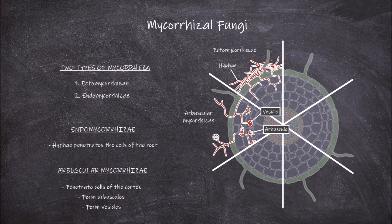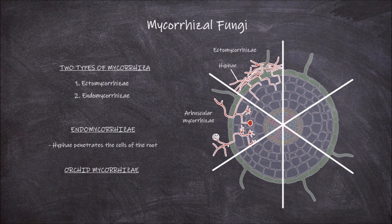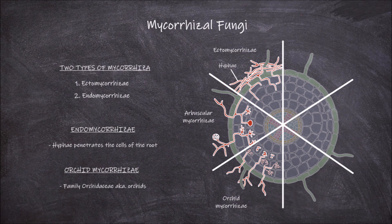Another form of endomycorrhizae is orchid mycorrhizae. Orchid mycorrhizae are specifically found between fungi and the roots of plants from the family Orchidaceae, which are the orchids. In this type the penetrating hyphae form coils within the cells called pelotons. Old pelotons appear as clumps in the cells.